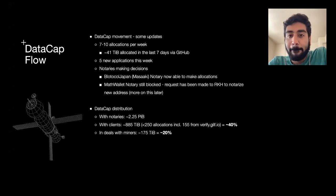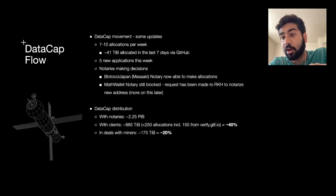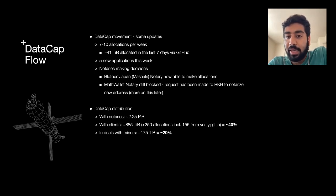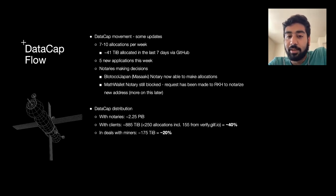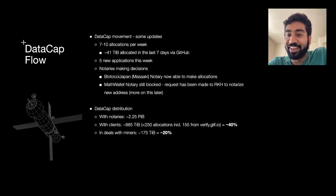A couple of points to highlight this week. We're averaging around eight-ish allocations happening manually through GitHub — so this does not count the automated verifier. We have somewhere between eight and ten for the last couple of weeks, over the last four weeks. In the last seven days, I see at least 40 terabytes of data cap that have been allocated. There were five net new applications this week, though a lot of duplicate issues were created and deleted. Masaaki has finally been activated and ready to go on chain, and Performous Notary also started making their first allocations this week.